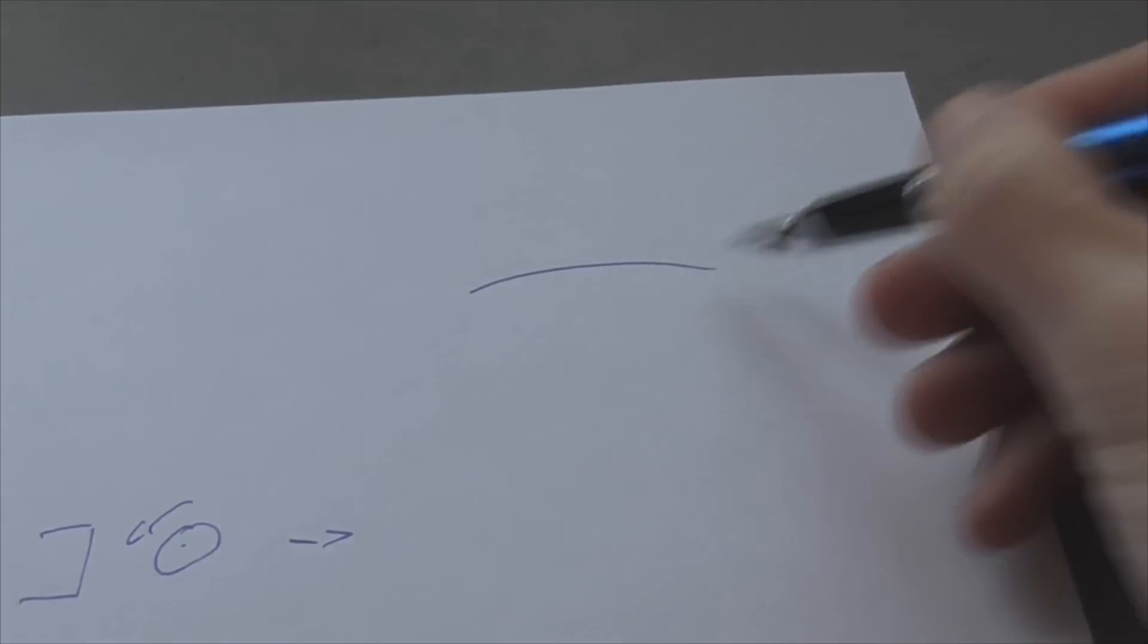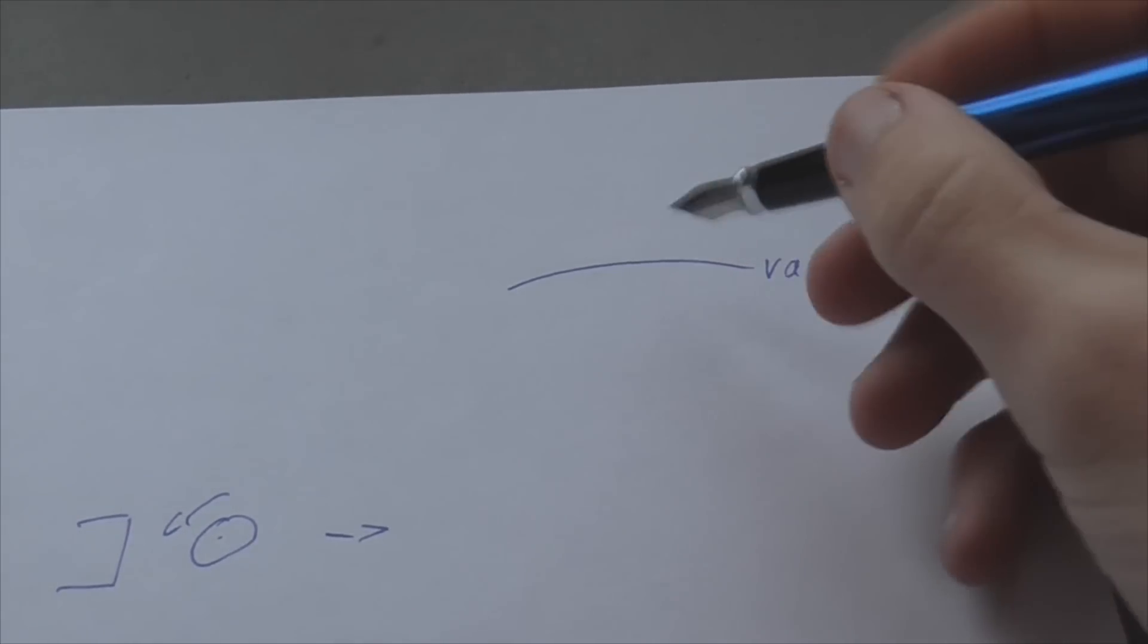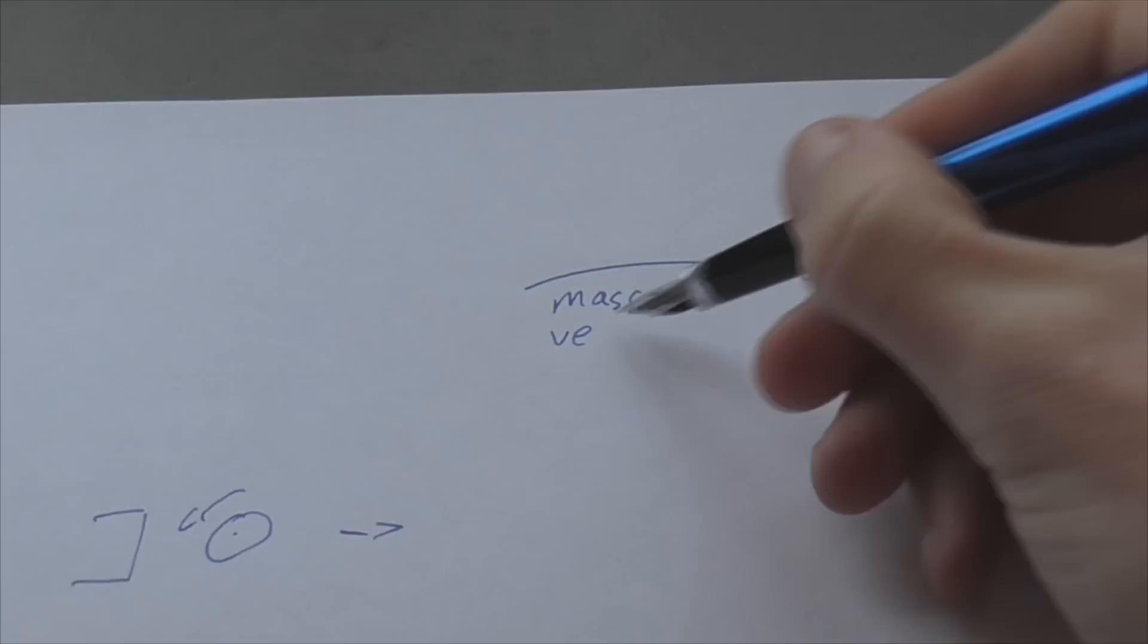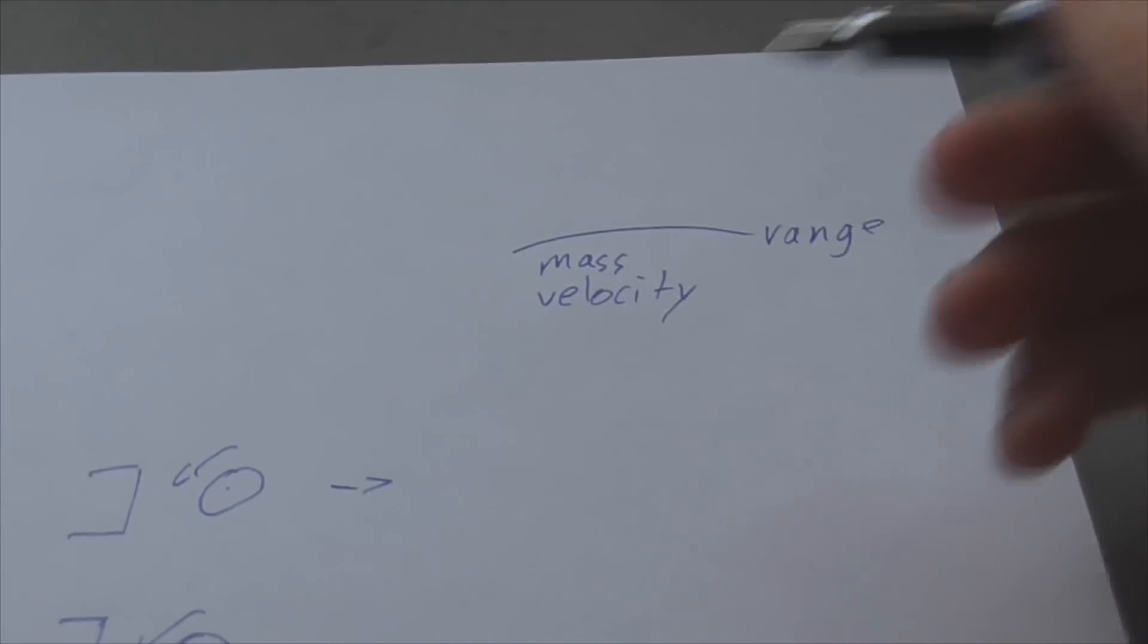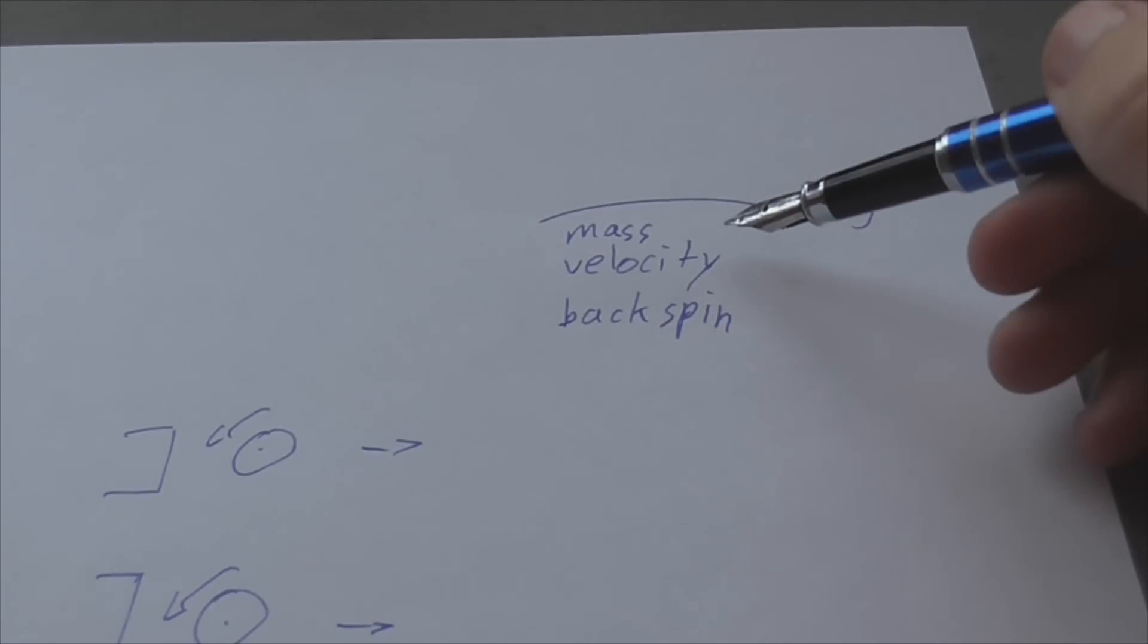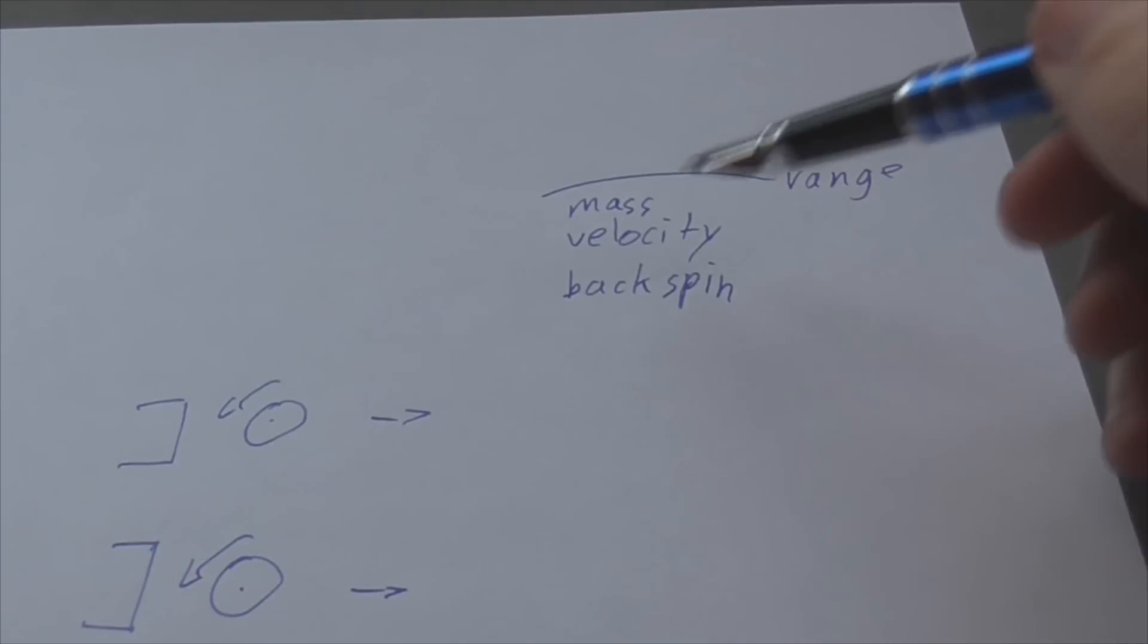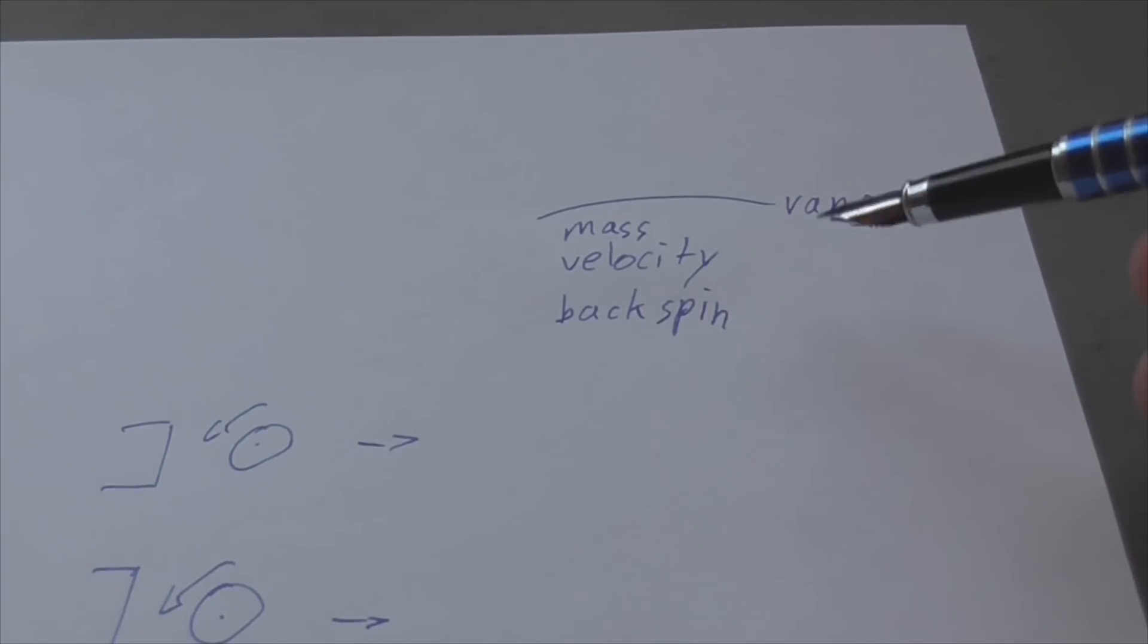So to recap, we have range, which depends on the mass, the velocity and the backspin. Assuming this one is enough, the range depends solely on the mass and the velocity. So bucking, barrel, everything does not influence range.